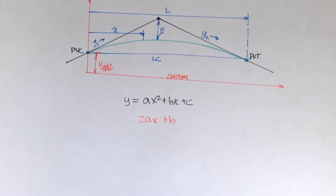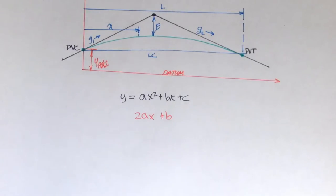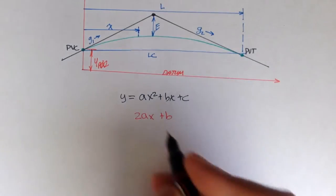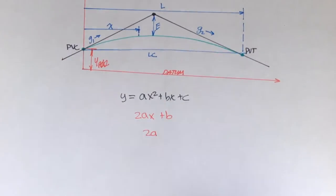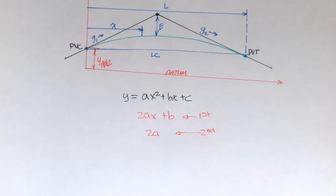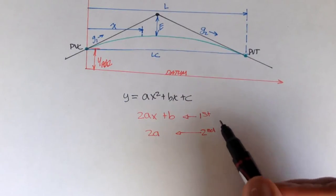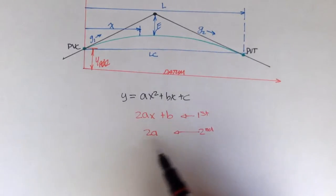That's the first derivative and that's the slope of the vertical curve. If we were to derive this new equation again, we would get the rate of change of slope — that's given by the second derivative, which in this case would simply be 2A. So the first derivative gives the slope at any point, and the second derivative gives the rate of change of slope.